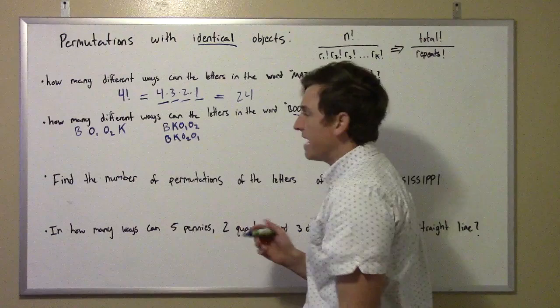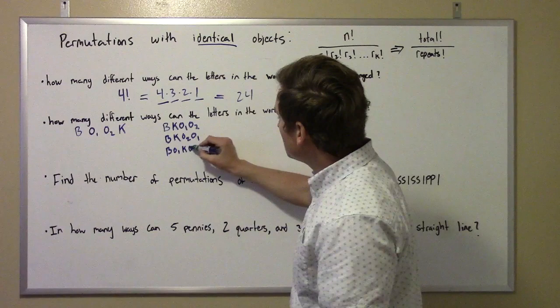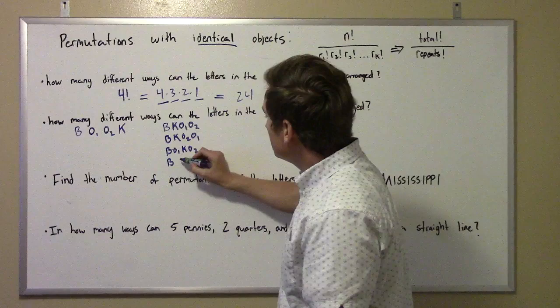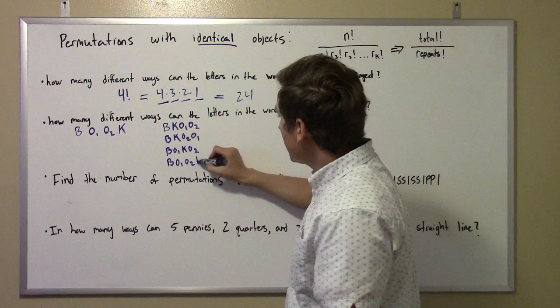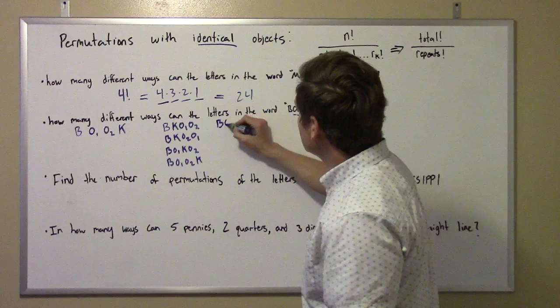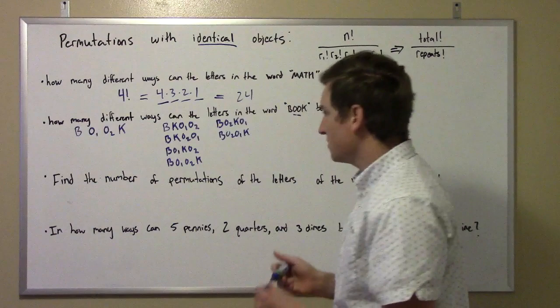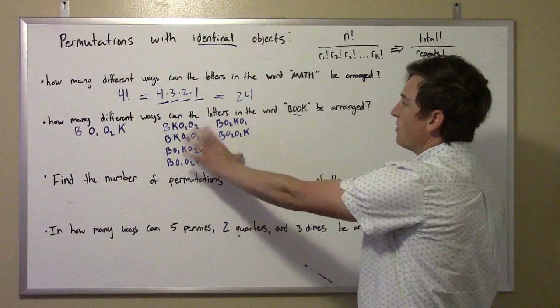Let's do B in first position and O1 in second position — then I could do B, O1, K, O2. Also B in first position and O2 in second position — then I could do B, O2, K, O1. Those aren't all of them — those are only the ones with B in front. Those are all the different orderings where B is the first letter. Notice there are six of them.